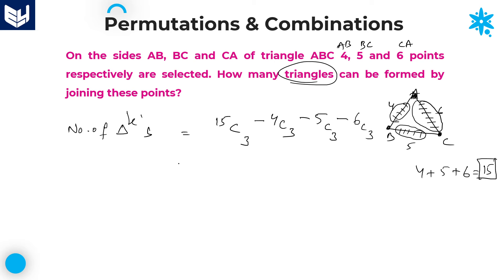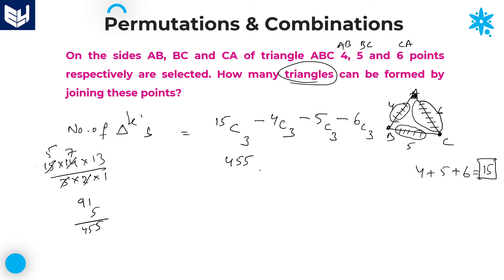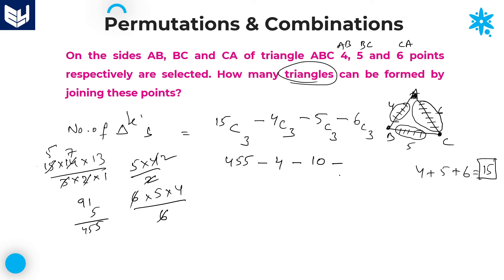That gives the exact result. Calculate 15C3: 15 into 14 into 13 divided by 3 factorial equals 455. Then 4C3 equals 4C1 equals 4. Then 5C3 equals 5C2 equals 5 into 4 divided by 2, which equals 10. Then 6C3 equals 6 into 5 into 4 divided by 6, which equals 20. So we have 455 minus 4 minus 10 minus 20, which is 455 minus 34.